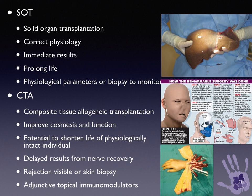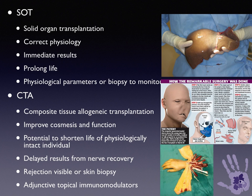The difference between solid organ transplantation and composite tissue allotransplantation is that in a solid organ transplant, one is correcting physiology, results can be measured immediately, and life can be prolonged. In composite tissue allotransplantation — such as face or hands — the goal is improving cosmesis and function, but there's a potential to shorten the life of a physiologically intact individual. Results are delayed as nerves must re-innervate muscles. However, rejection can be visible, skin biopsies can be taken, and topical immunomodulators can be used — a significant benefit over solid organ transplantation.